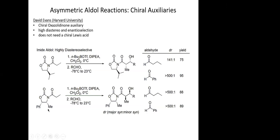Here's another analog of the auxiliary where you have a methyl group and a phenyl group. The same Lewis acid — dibutylboron triflate — and isopropylethylamine as your base. Conditions are zero degrees in methylene chloride. To form the enolate you normally have to cool everything down to minus 78 and use butyllithium or some other base.